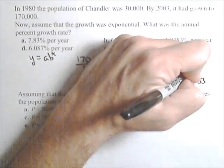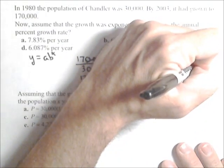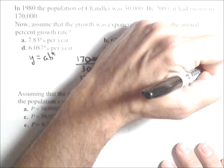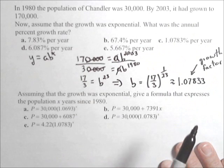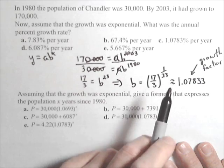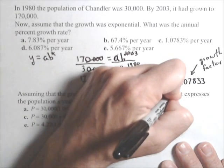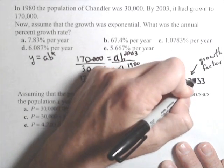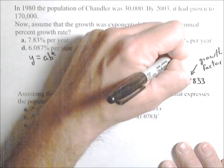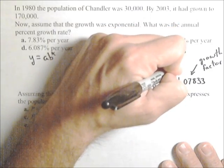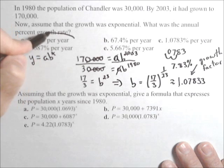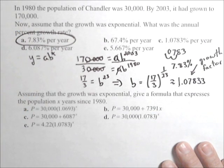That's the growth factor, not the growth rate. That's our b, the base of our exponential. To convert a growth factor to a growth rate, you subtract one and multiply by 100 to get a percent. Subtracting one gives us 0.07833, then multiplying by 100 moves the decimal point two places, giving us 7.83%.